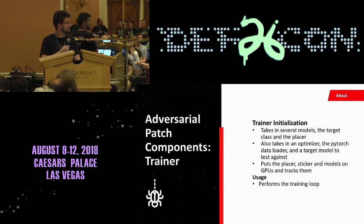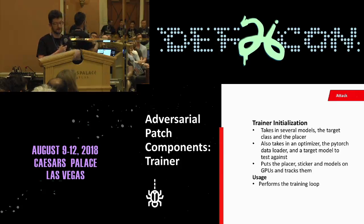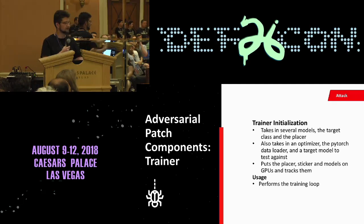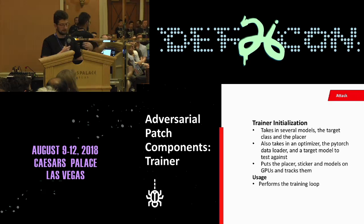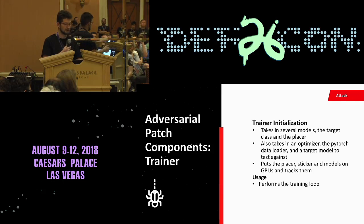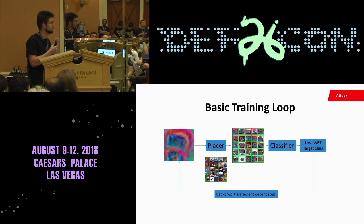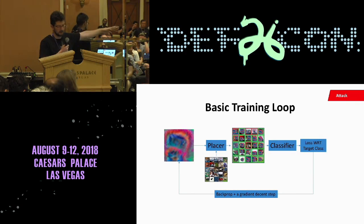Then we get to the last component: the trainer. This takes in several models to train against — these will be your white box models that you're attacking. It also takes an optimizer and a few other things you need to do gradient descent. This places the models and the stickers on the GPU and does all the juggling you don't want to think about — it actually just performs the training. We have a basic training loop here. This is for CIFAR.